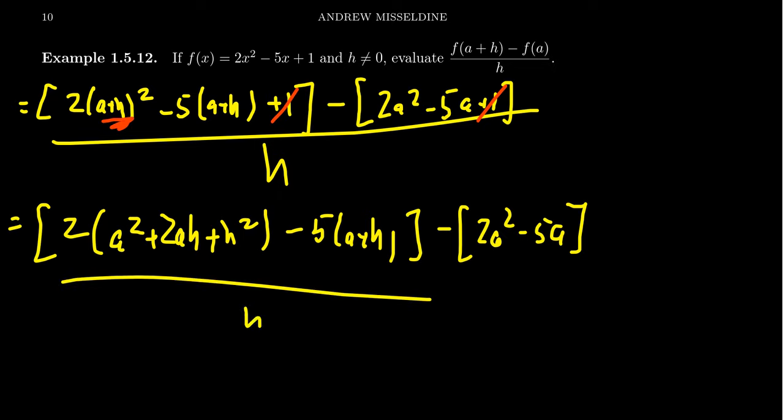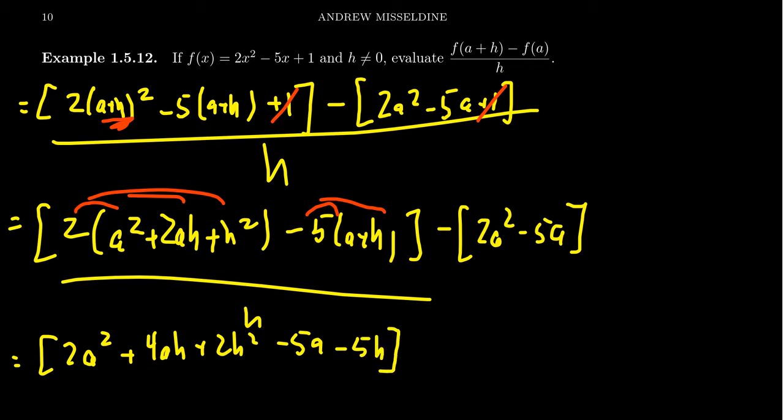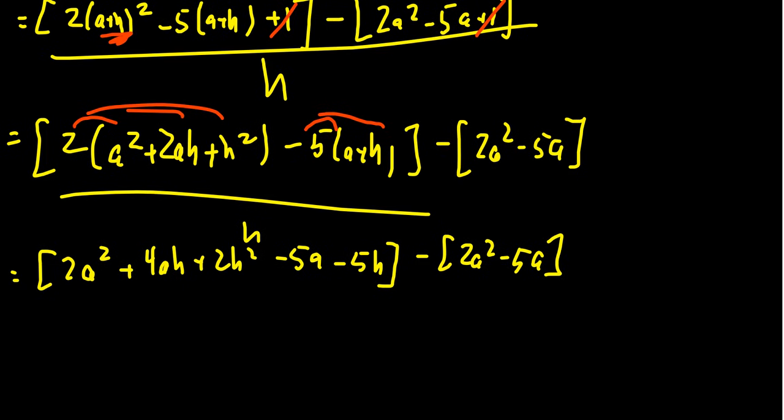The next thing I want to do is distribute all of these coefficients through. And if we do that, we're going to end up with 2a² + 4ah + 2h². We're going to get -5a and -5h. And then we subtract from that 2a² - 5a. Now that everything in the numerator is completely expanded out, don't forget your denominator, of course, h. It's along for the ride.